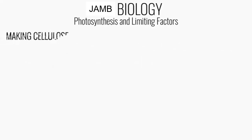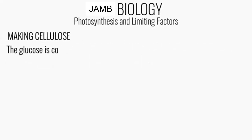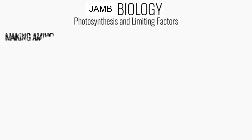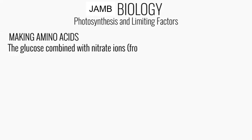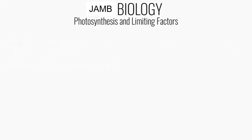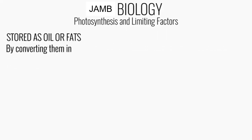Number two is for making cellulose. The glucose is converted into cellulose, which makes up a strong plant cell wall. Number three is for making amino acids. The glucose combines with nitrate ions to make amino acids, which can then be made into protein. Glucose can also be stored as oils or fats by converting them into lipids and storing them in seeds.